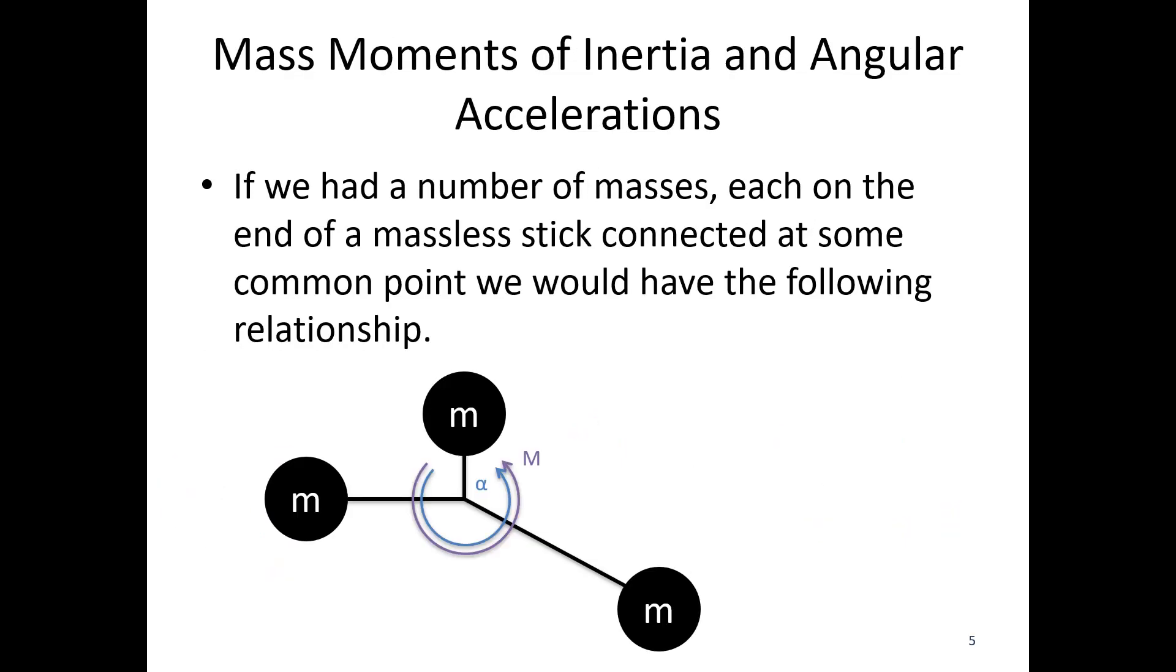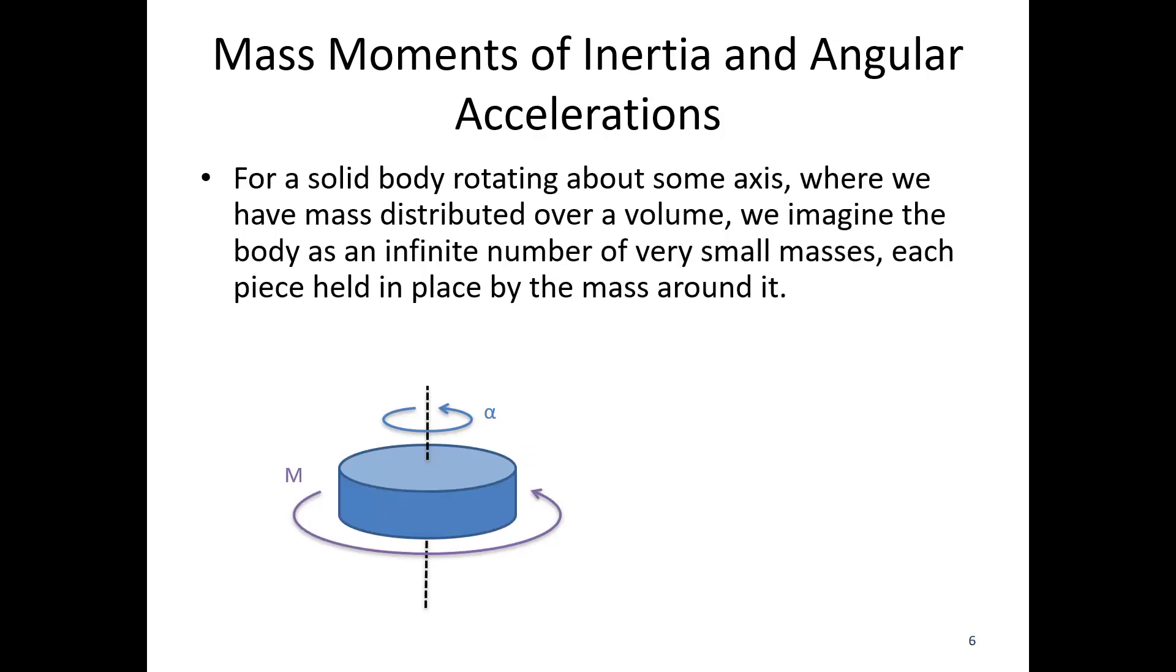If we had a number of masses each on the end of a massless stick, we'd have the following relationship. So basically if I sum up all of these mass times distance squared terms, that sum would relate my overall moment and my overall angular acceleration.